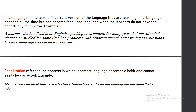The next reason is interlanguage — the learner's current version of the language they are learning. Interlanguage changes over time but can become fossilized when the learner does not have the opportunity to improve. For example, a learner who has lived in an English-speaking environment for many years but hasn't attended classes may struggle with reported speech. The final reason is fossilization, which refers to the process in which incorrect language becomes a habit and cannot be easily corrected — for example, many advanced Spanish-speaking learners do not distinguish between 'he' and 'she.'